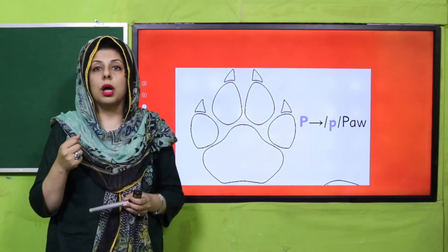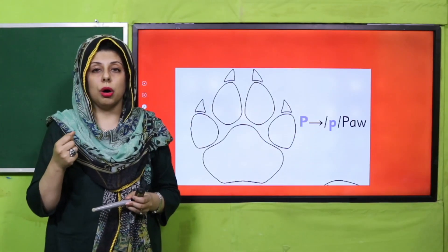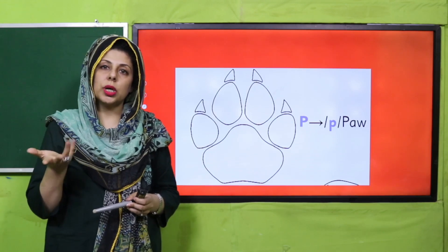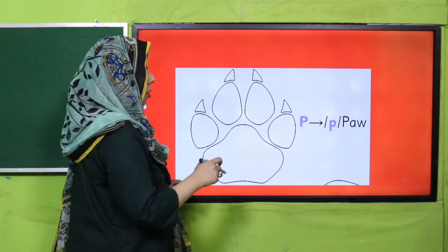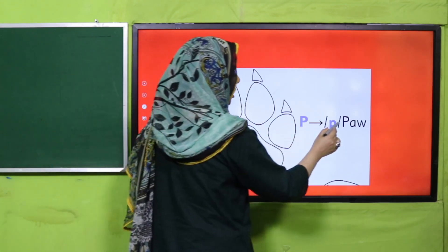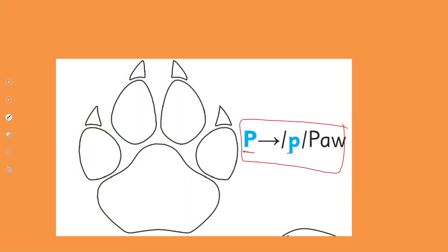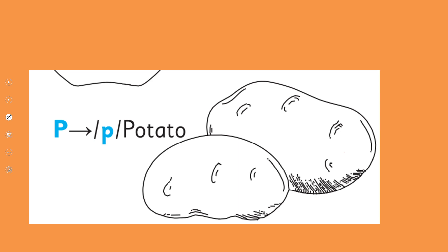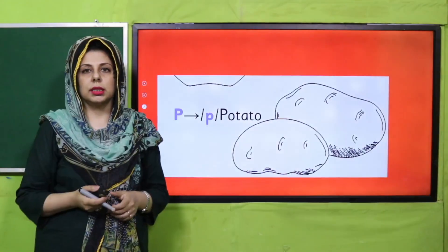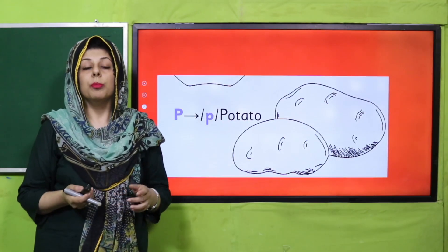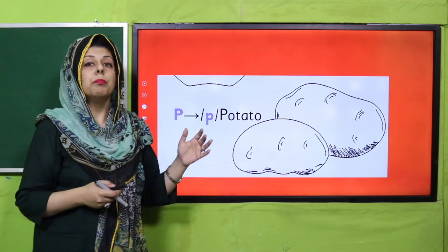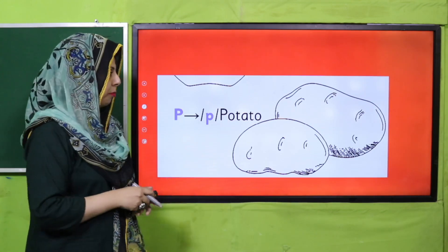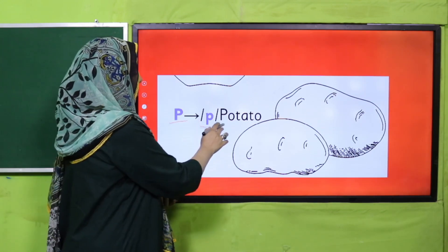Paw — yani Urdu mein jis ko gati hain, Punjab — paw. Teacher, yeh flash card aapke paas hona chahiye — P, P, paw. The next is the picture of a potato — yes, it's a potato. P, P, potato.